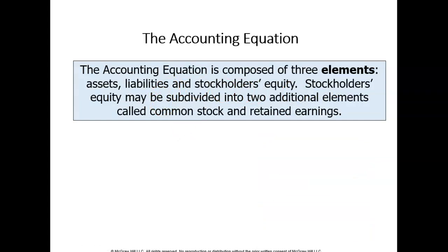To keep track of a company's different types of business information, one method is to use what's called the accounting equation. The accounting equation is composed of three elements: assets, liabilities, and stockholders' equity. Are you familiar with these three elements that make up the accounting equation?